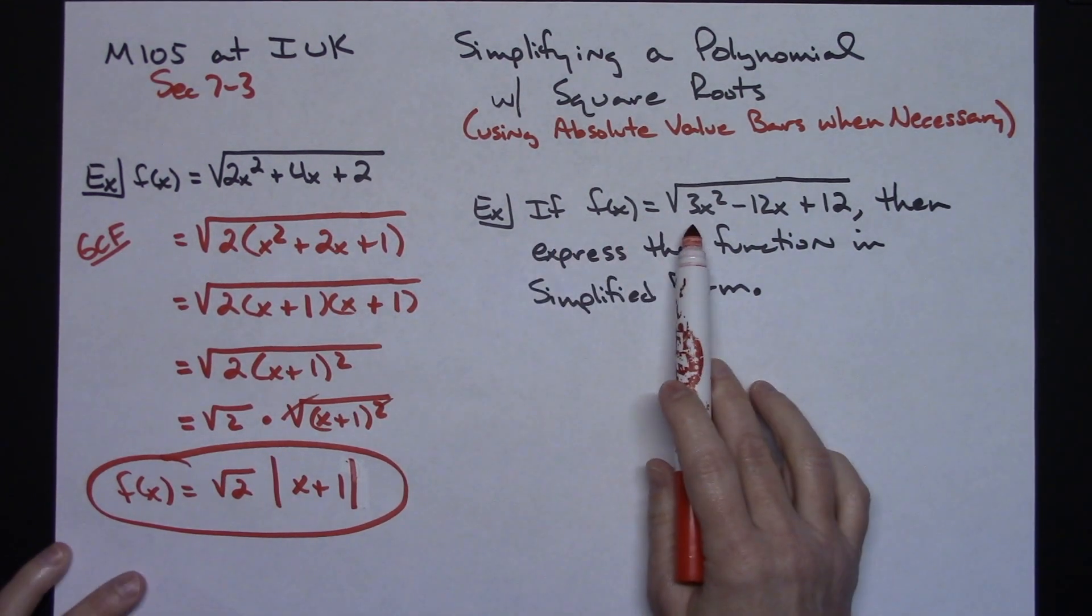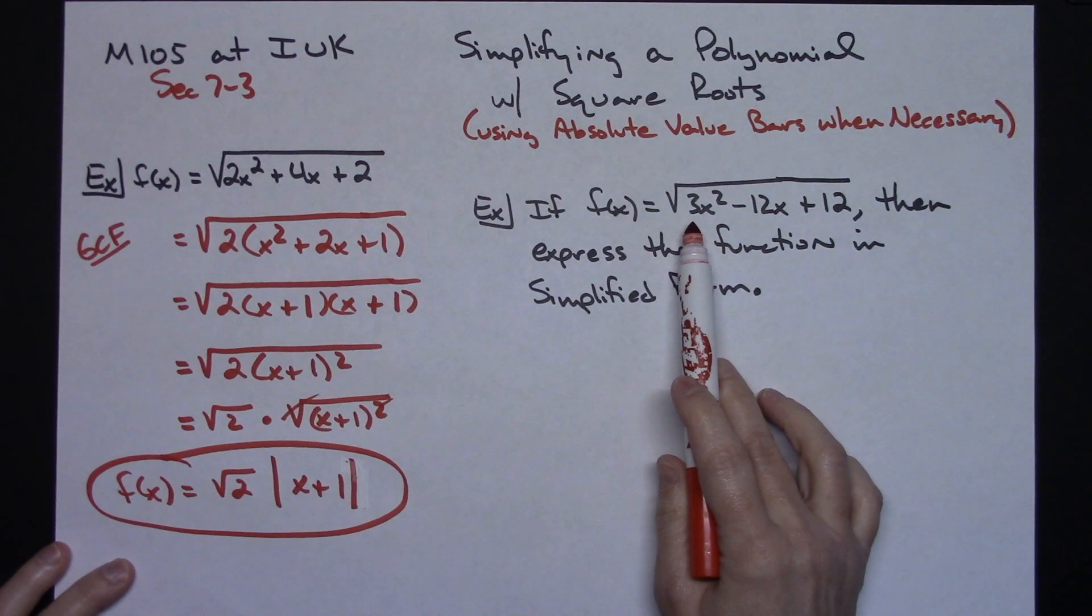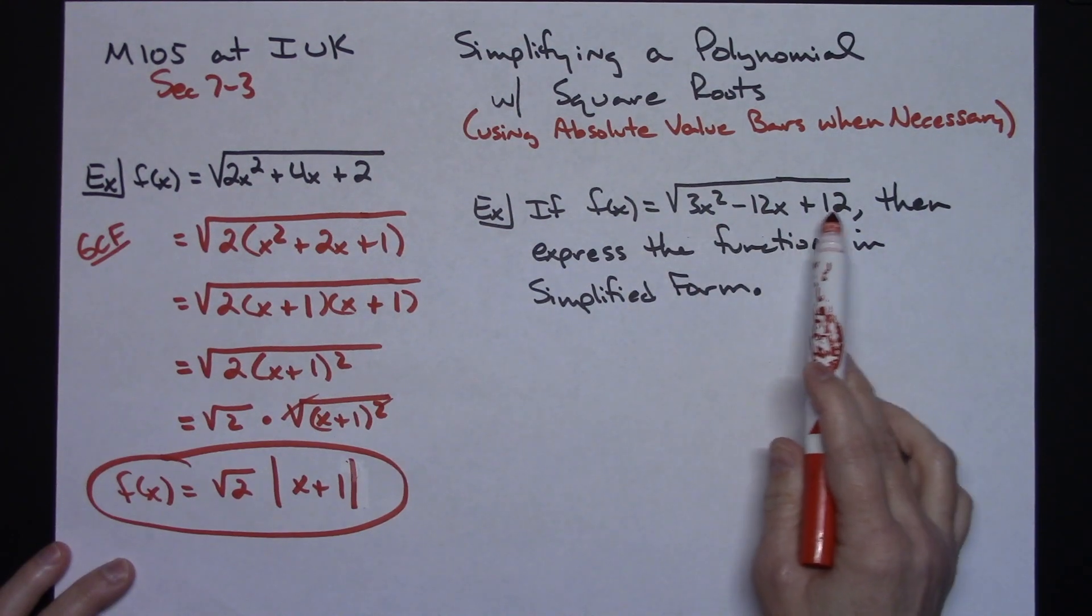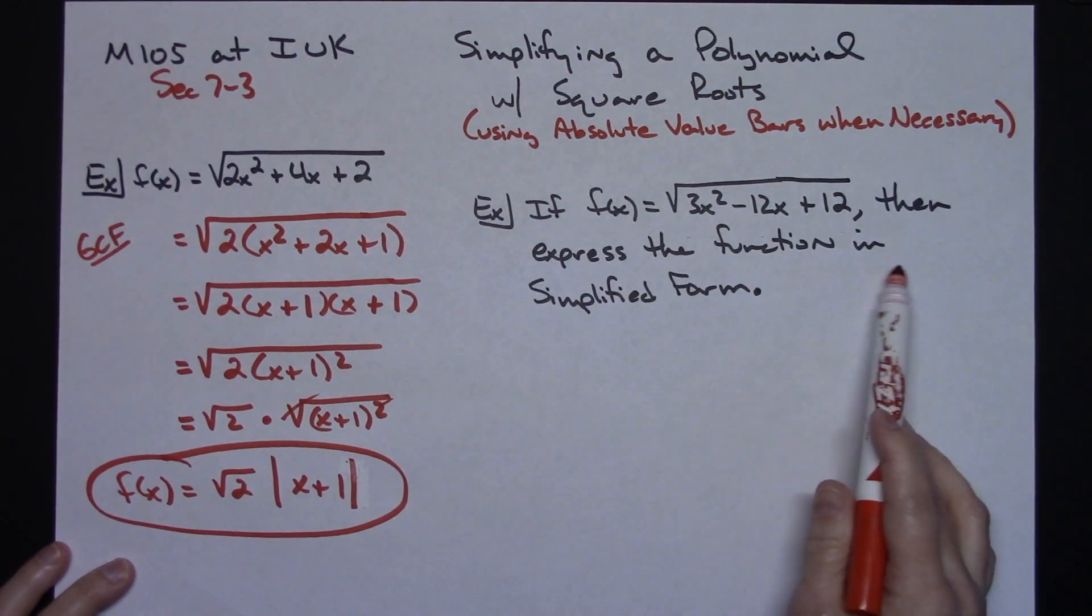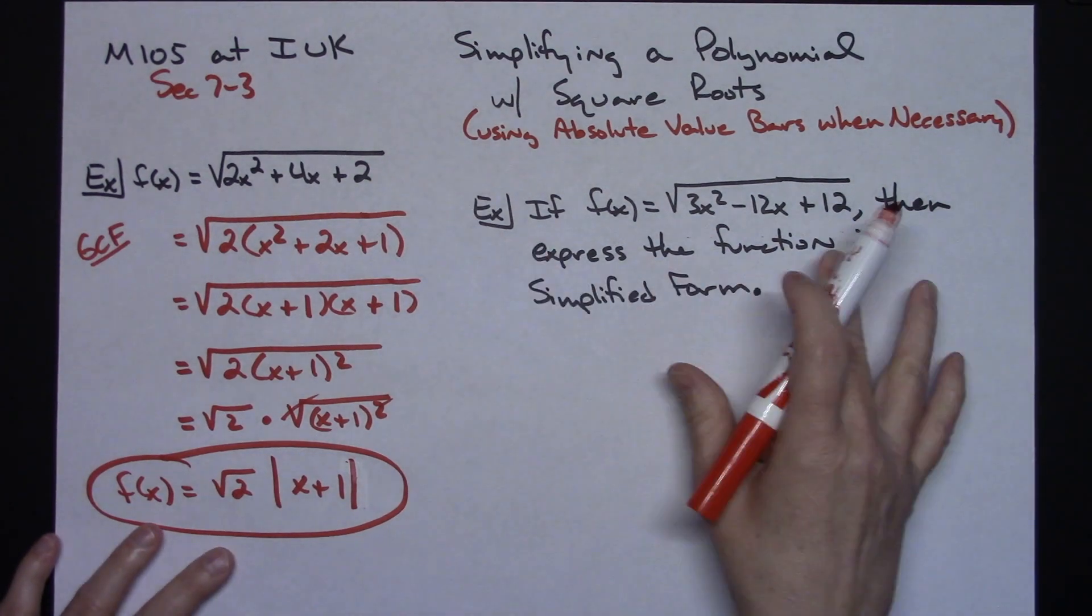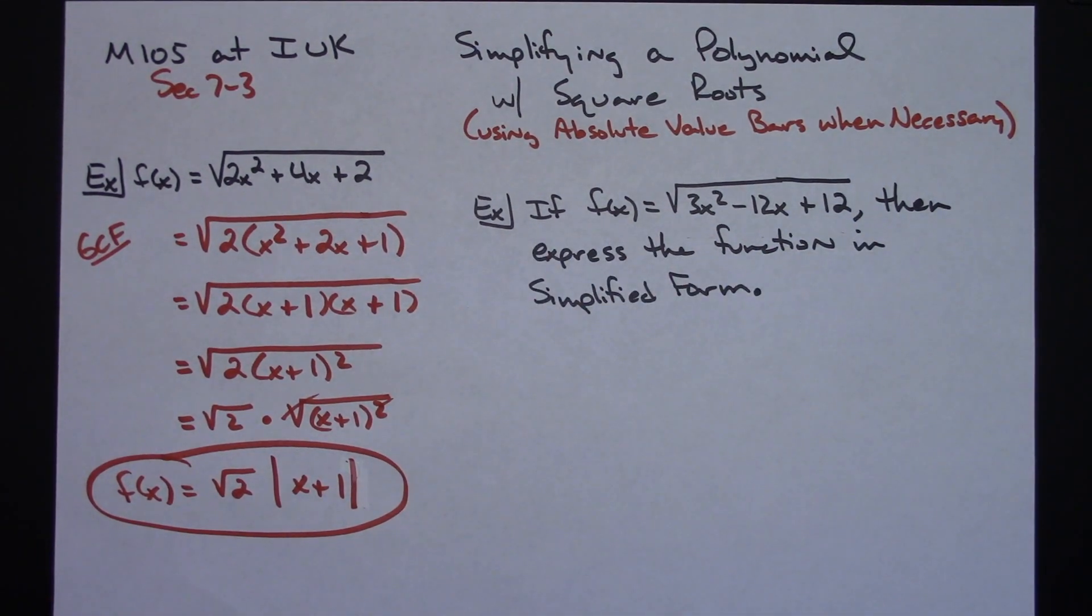This one says if f of x is equal to the square root of 3x squared minus 12x plus 12, then express the function in simplified form. But again, we will be using absolute value bars when necessary, because this is a square root, and we are not going to assume any of the variables are positive.